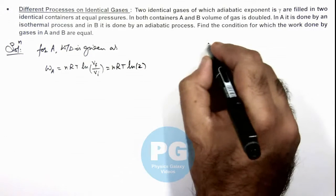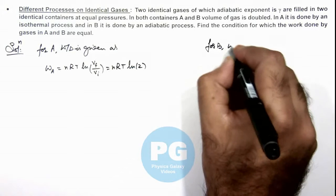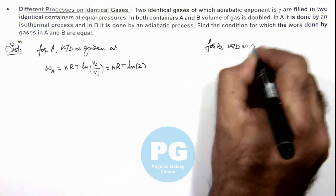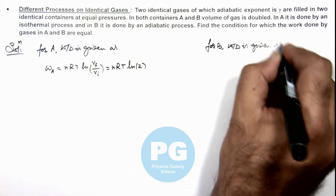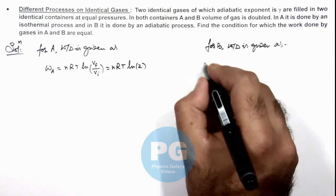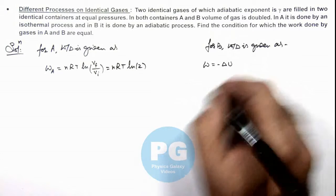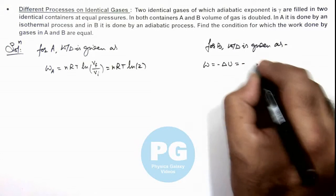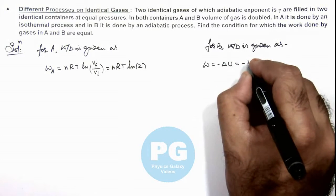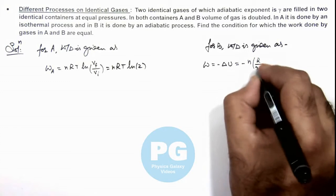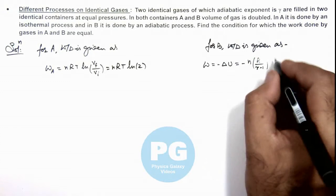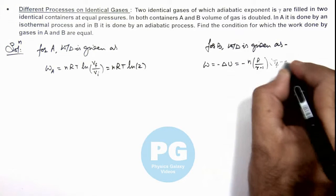Similarly for container B, we can write work done as: since this is an adiabatic process, work done can be simply given by negative of change in internal energy, which is minus n C_v, which is R/(gamma - 1) multiplied by change in temperature, T_final minus T_initial.